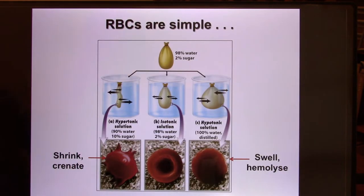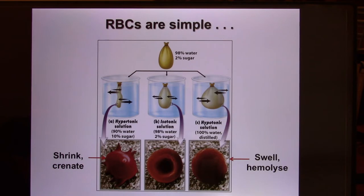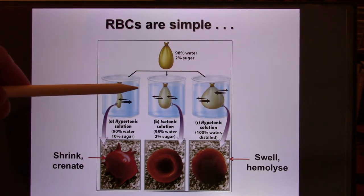Why did she die? The plasma volume is about 3.5 liters, and with red blood cells the total blood volume is about 5 liters. When you quickly pour in 2 liters of water — which you need per day, but not per 10 minutes — you dilute your blood from 5 liters by 40%.